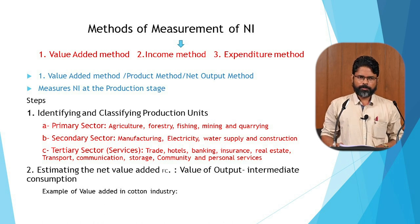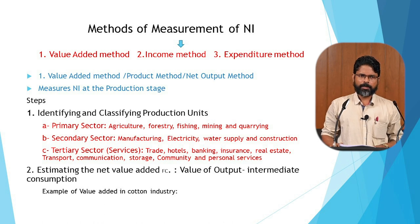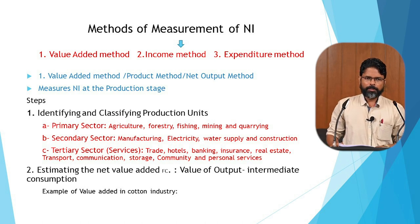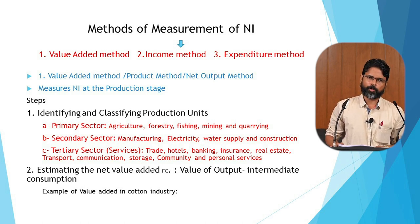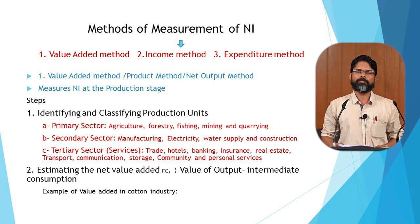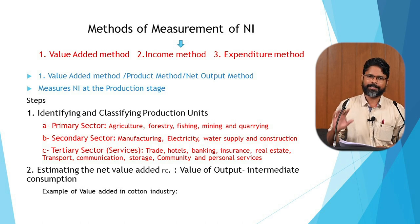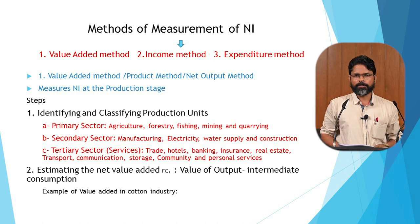First of all, the value-added method. This method is also known as the net output method or product method. The measurement of national income at the stage of production is the peculiarity of this method. In the circular flow there are three stages — production stage, income distribution stage, and expenditure stage. If we measure the national income at the stage of production, this method is known as the product method, value-added method, or net output method.